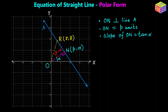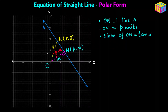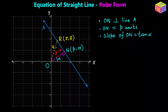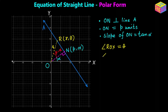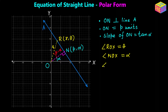The distance of the point R from the origin is lowercase r, and the angle that OR makes with the positive direction of the x-axis is theta. So angle ROX is theta, and angle NOX is equal to alpha. Therefore, angle RON would be theta minus alpha.